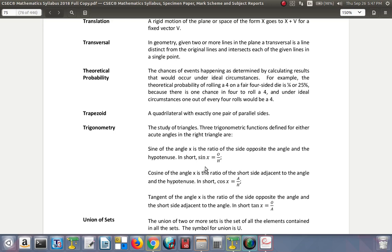Theoretical probability: the chances of events happening as determined by calculating results that would occur under ideal circumstances. For example, the theoretical probability of rolling a four on a fair die is a quarter or 25 percent on a four-sided die, I mean.